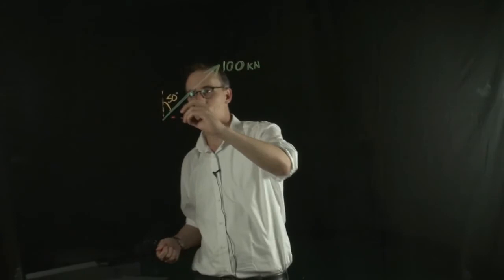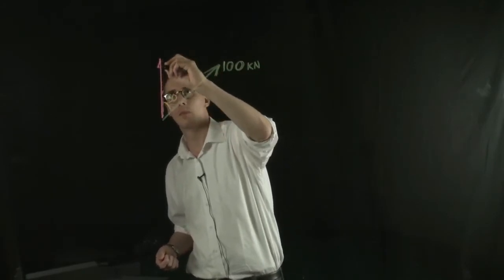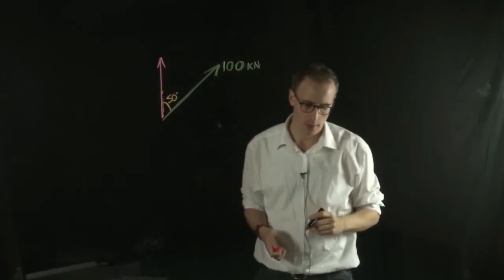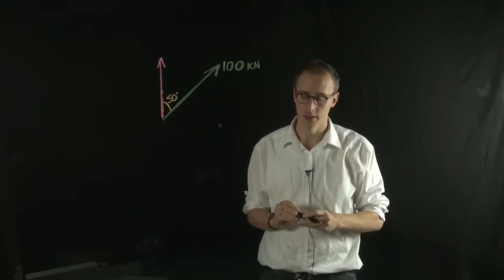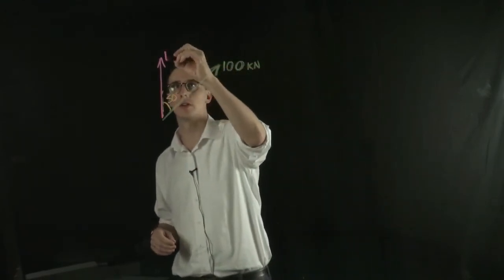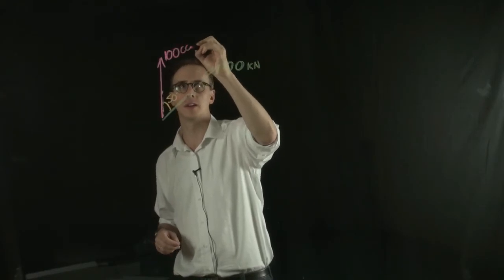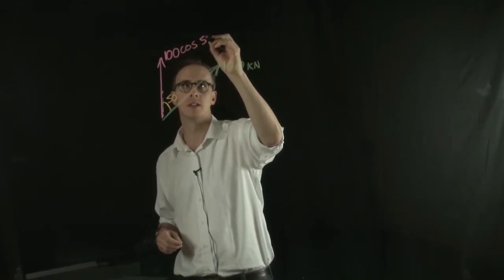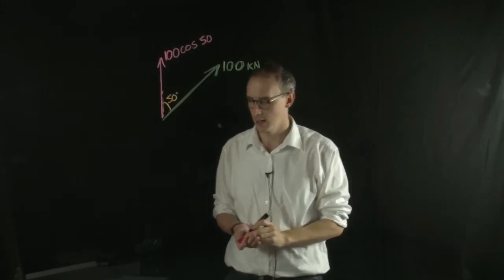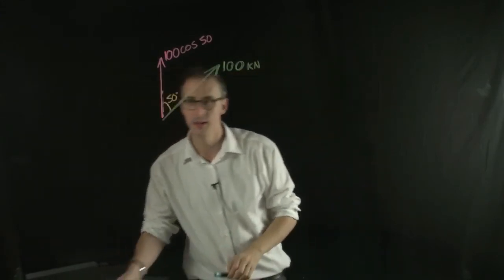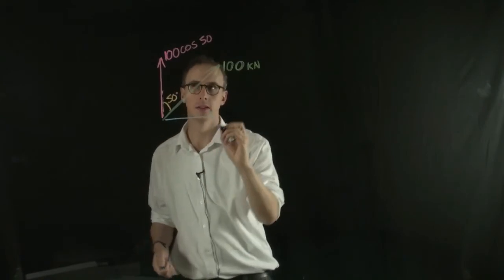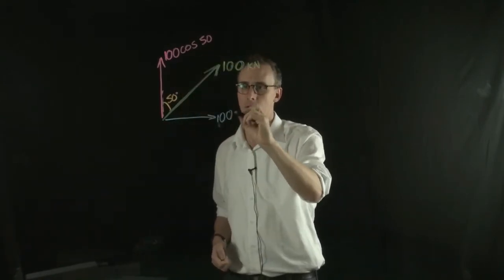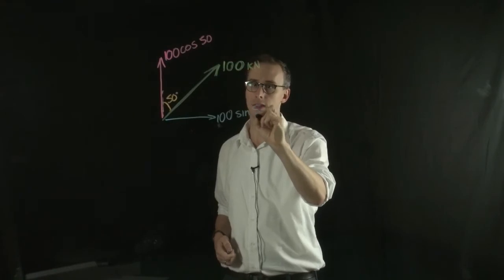Well, the vertical component is equal to the force multiplied by cosine 50. So 100 cosine 50. And the horizontal component is equal to the force sine of the angle. So this is 100 sine 50.